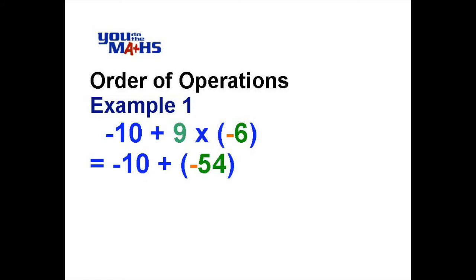Now we've done another line at the same time. Here what we've said is if we're adding a negative number, that's the same as subtraction. So we've got negative 10 minus 54.